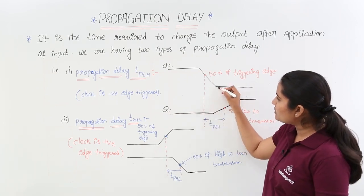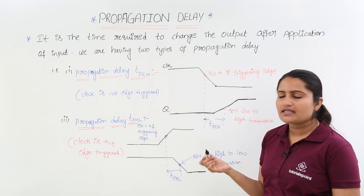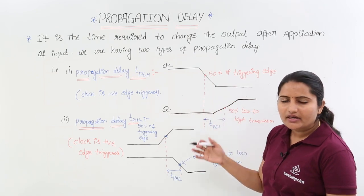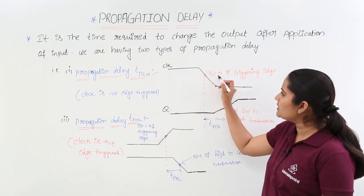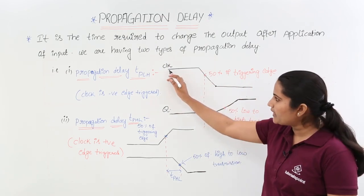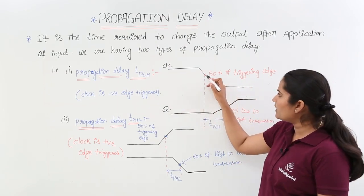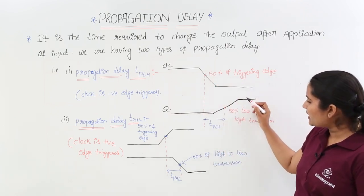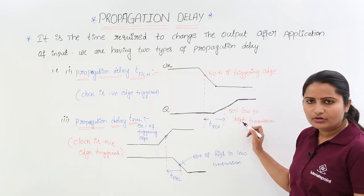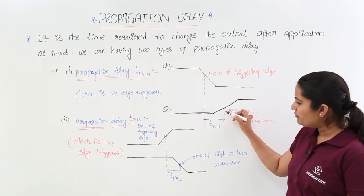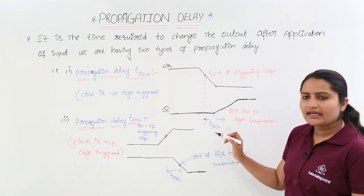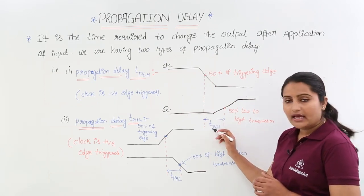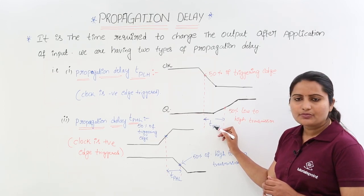Whenever the negative edge of the clock occurs, the output is going to change. Practically, we consider 50% of the triggering edge. For negative triggering, we consider 50% of the triggering edge, and in the same way for low to high transmission we consider 50% of the low to high transmission point. Whatever delay or period is there between those two points, that is the propagation delay.